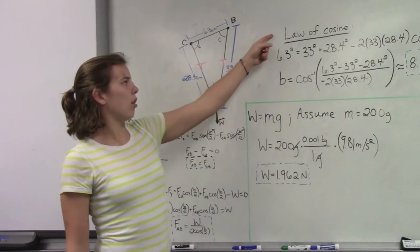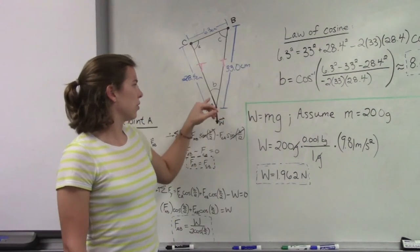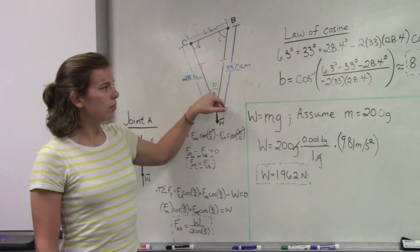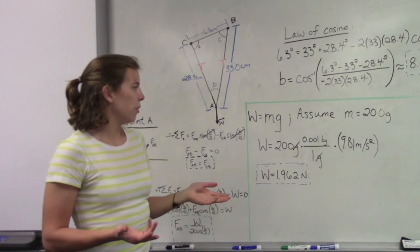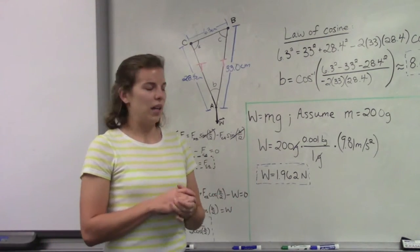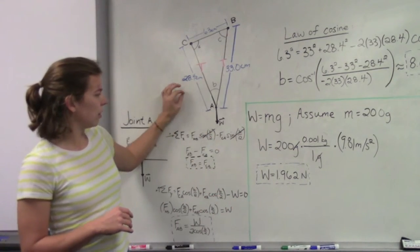We started off with using the law of cosines to solve for this angle here. And then from there, we needed to find our weight, which is kind of counteracting at this point here.